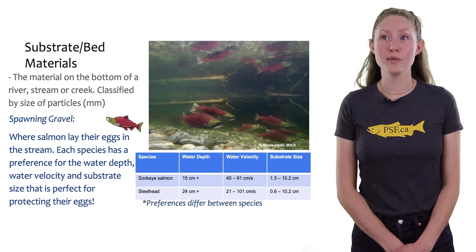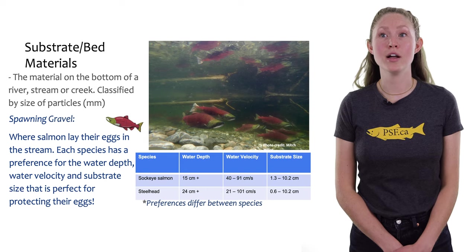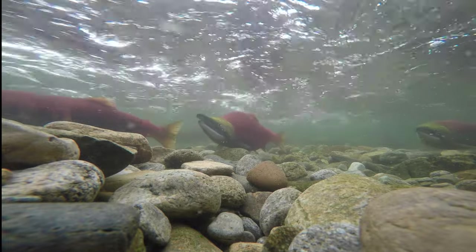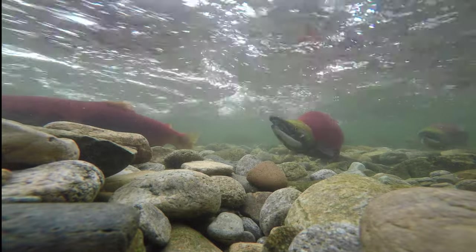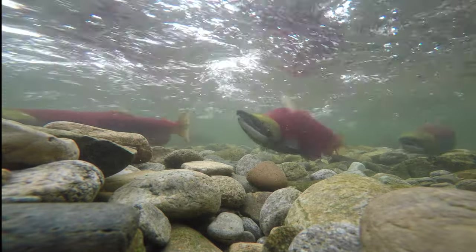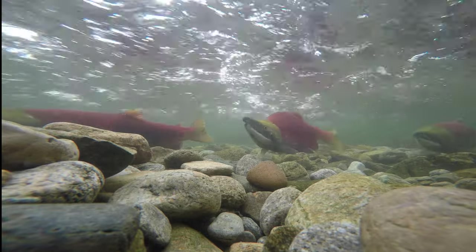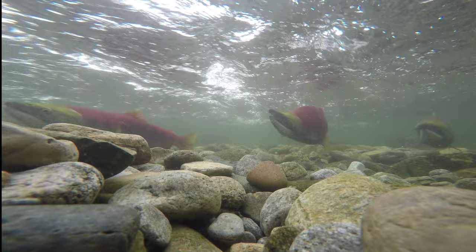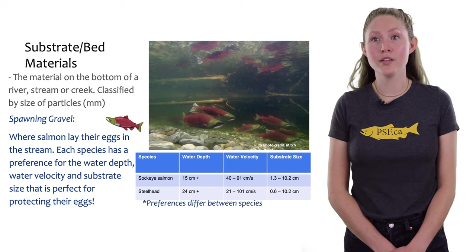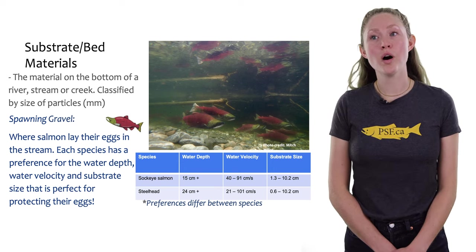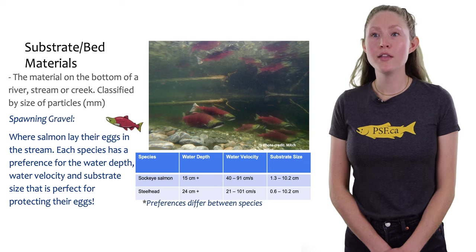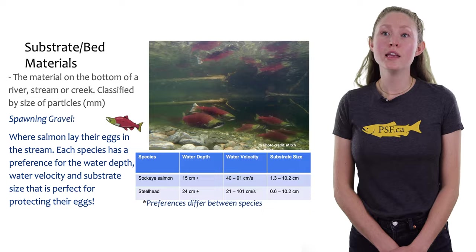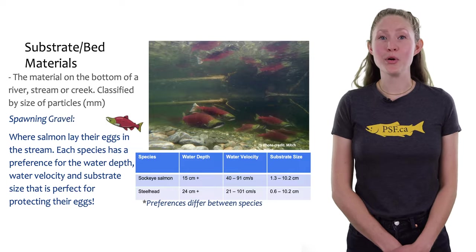Other factors also determine how salmon select sites to spawn, including depth and velocity. Sockeye salmon, for example, like to spawn in pretty shallow waters that aren't flowing too fast, and they can spawn in a wide range of substrate sizes, but not too small. Steelhead, on the other hand, prefer to spawn in waters that are a little deeper, and their eggs would be safe in a wide range of substrate sizes, even with gravel as small as peppercorns.